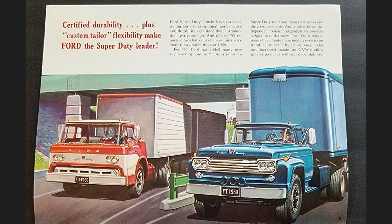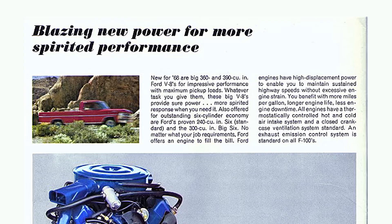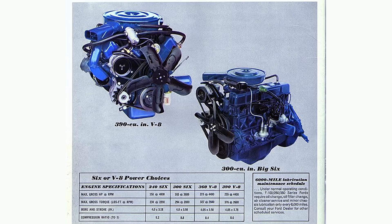FT engines with displacements of 330, 359, 360, 361, 389, and 391 are not featured in this episode because they are considered FT engines. People will say the 360 is an FE engine, which it technically is, but it was found in the Ford F-Series trucks, and that's why it's not listed with these engines.